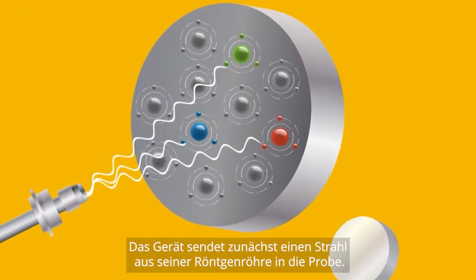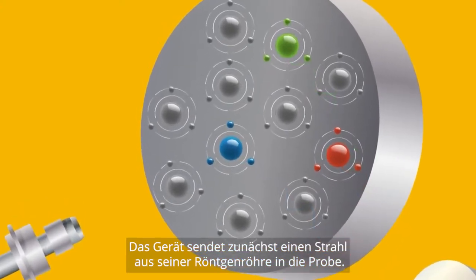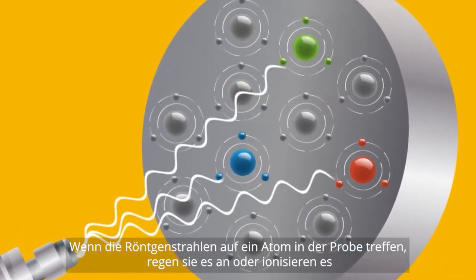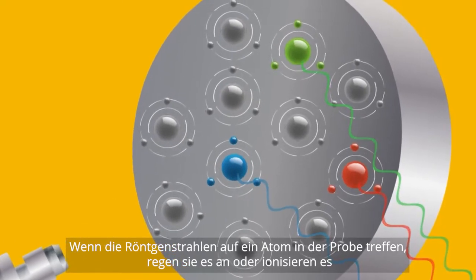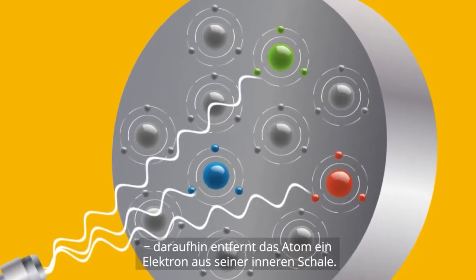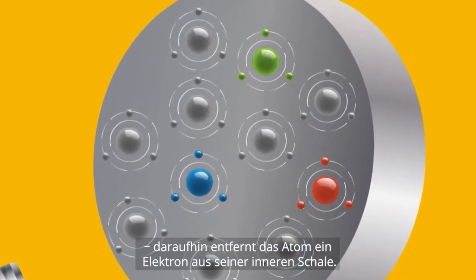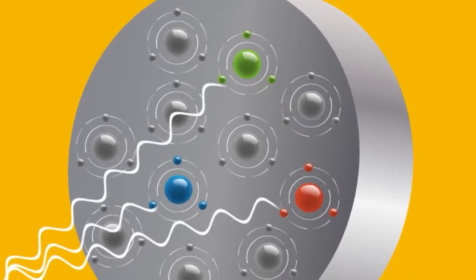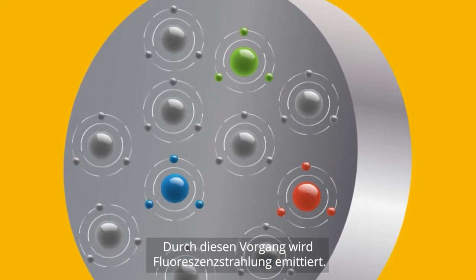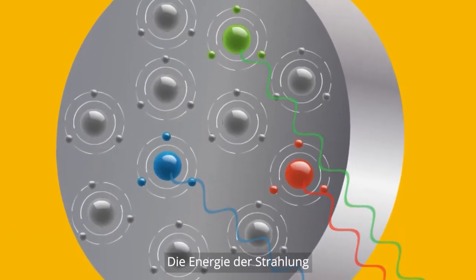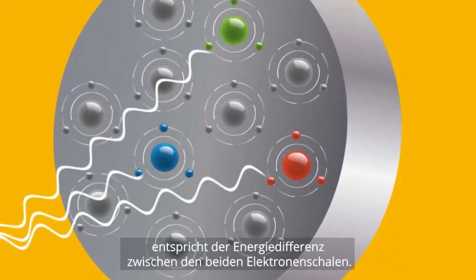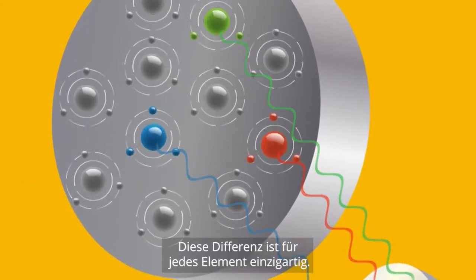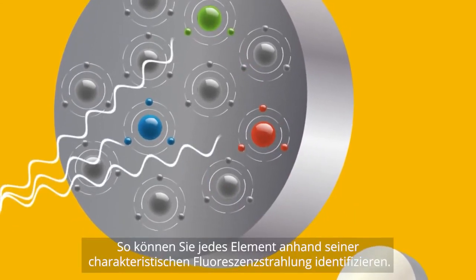How does XRF spectrometry work? The instrument begins by sending a beam from its X-ray tube into the sample. When the X-rays hit an atom in the sample, they excite or ionize it, so the atom ejects an electron from its inner shell. An outer shell electron drops down to fill the gap, and this movement emits fluorescence radiation. The energy of the radiation equals the energy difference between the two electron shells.